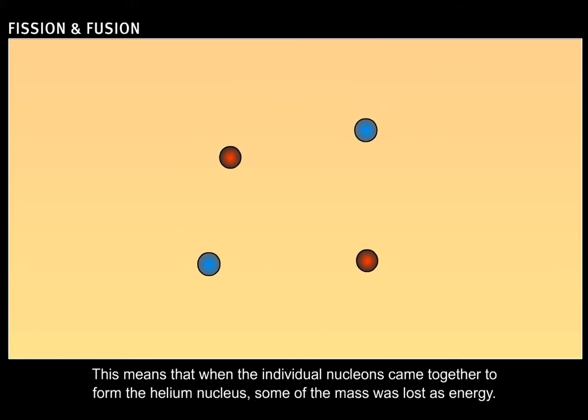This means that when the individual nucleons came together to form the helium nucleus, some of the mass was lost as energy.